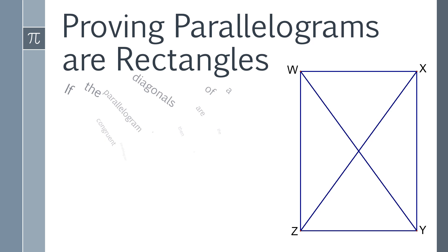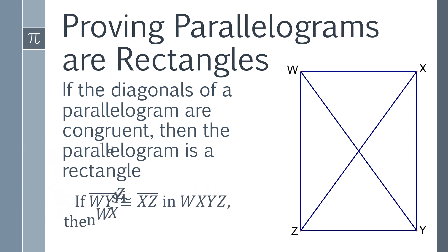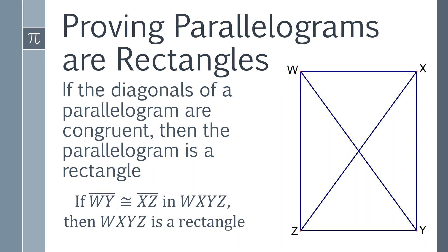In proving parallelograms or rectangles, basically you just need a parallelogram. And if the diagonals are congruent, then the parallelogram is a rectangle. So if segment WY is congruent to segment XZ in WXYZ, then WXYZ is a rectangle.